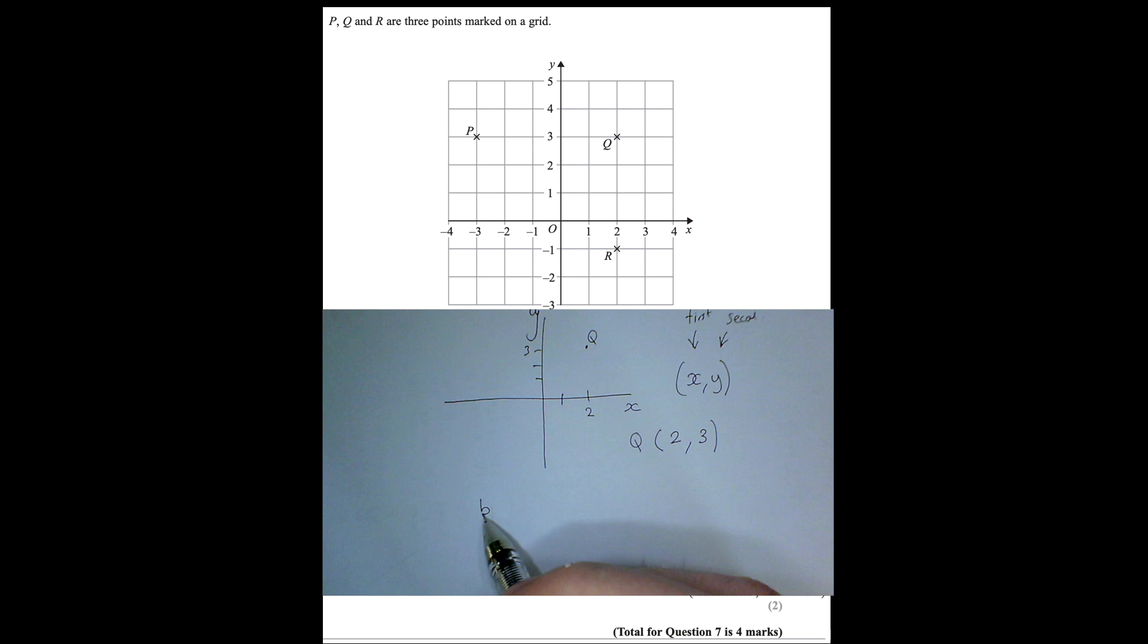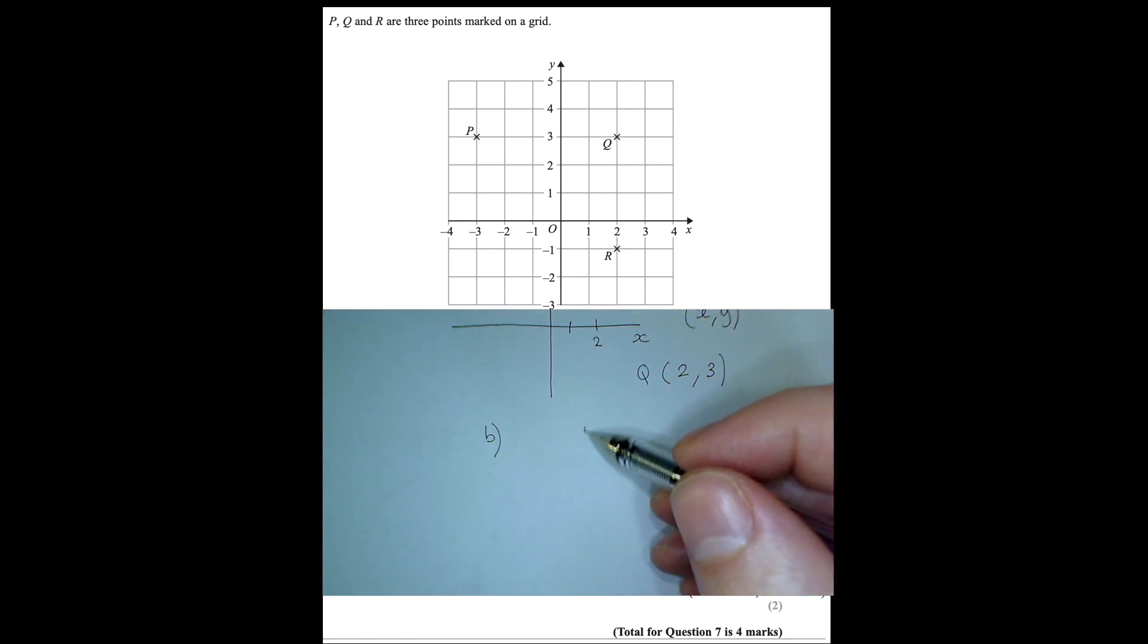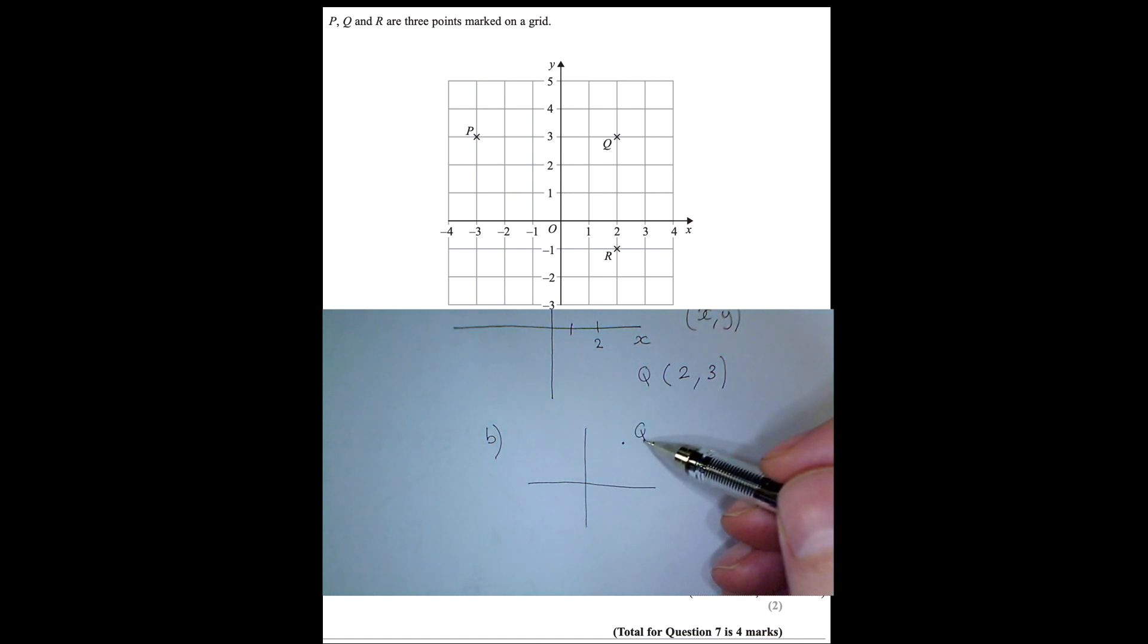For part b, we're asked to find S. Now it says we've got to complete the rectangle first, so let's just have a little think about that, shall we? So if I just draw another quick set of axes, rough sketch, here's my Q, here's my, I'm going to put in R and S as well, and there's P, and there's R, so S must be here to make a rectangle, hasn't it?